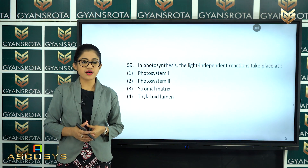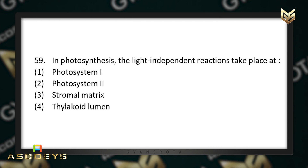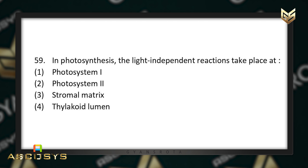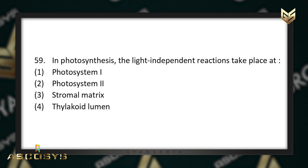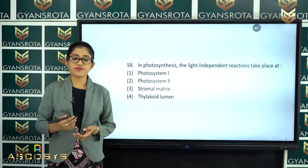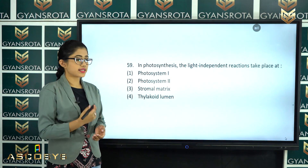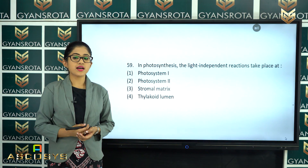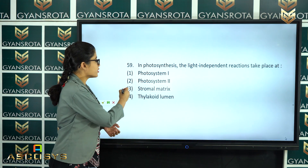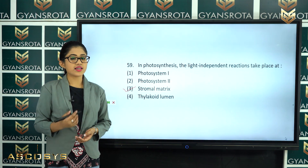The next question is question number 59. In photosynthesis, the light-independent reactions take place at photosystem 1, photosystem 2, the stromal matrix, or the thylakoid lumen? This is an easy question from the chapter Photosynthesis in Higher Plants. The light-independent reactions take place in the stromal matrix. Option number 3 is the correct answer.